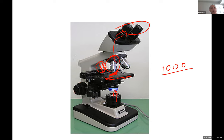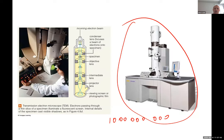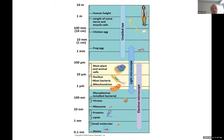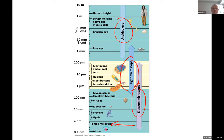The electron microscope goes up to a billion times magnification. The image quality is obviously far better with electron than with light microscopy. In terms of scale, you can see with the naked eye, then with a light microscope, and the electron microscope goes all the way to the smallest molecules — proteins, ribosomes — all of those you can see with an electron microscope.